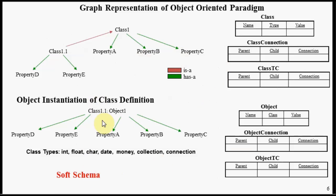This whole paradigm with these six relational database tables is something known as a soft schema.